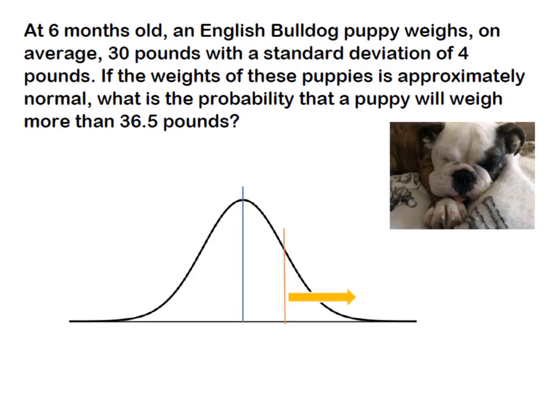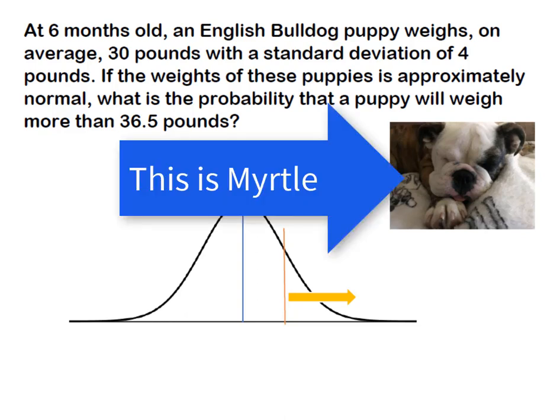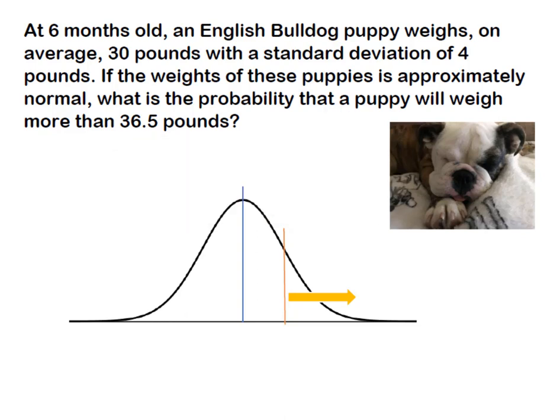At six months old an English Bulldog puppy weighs on average 30 pounds with a standard deviation of four pounds. If the weights of the puppies are approximately normal, what's the probability that a puppy is selected and it weighs more than 36 and a half pounds?